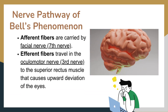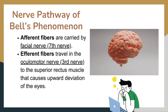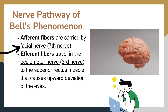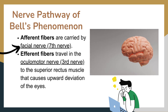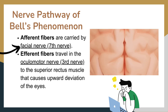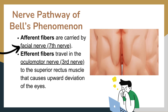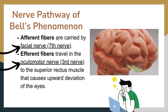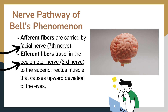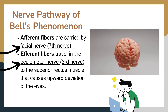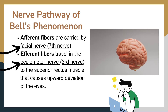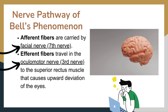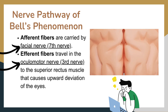Nerve pathway of Bell's phenomenon. Efferent fibers are carried by the facial nerve, the 7th cranial nerve. Afferent fibers towards the eye travel in the oculomotor nerve, the 3rd cranial nerve, to the superior rectus muscle, which causes upward deviation of the eyes.